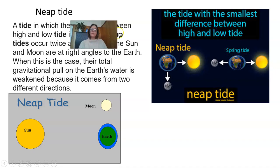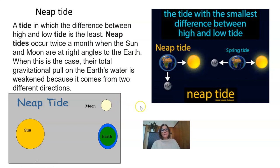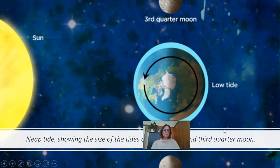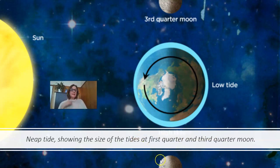A neap tide is a tide in which the difference between high and low tide is the least. Neap tides occur twice a month when the Sun and Moon are at right angles to the Earth. When this is the case, the total gravitational pull on the Earth's water is weakened because it comes from two different directions. The neap tide diagram shows the size of the tides at first quarter and at third quarter Moon — very different to the spring tides.